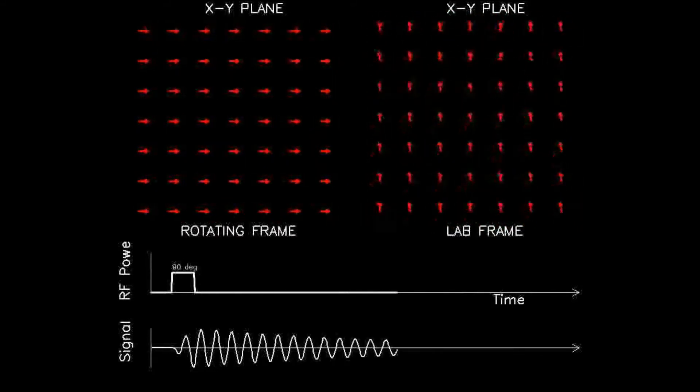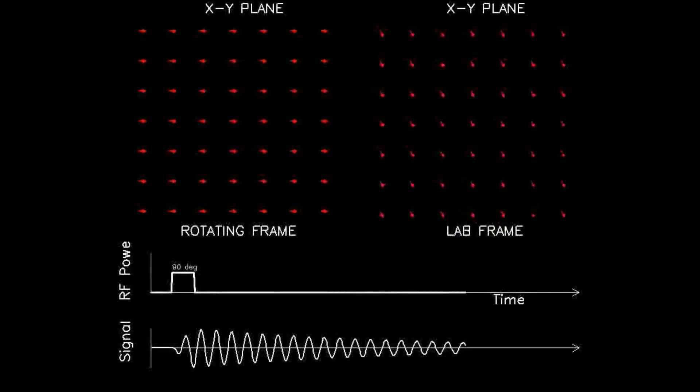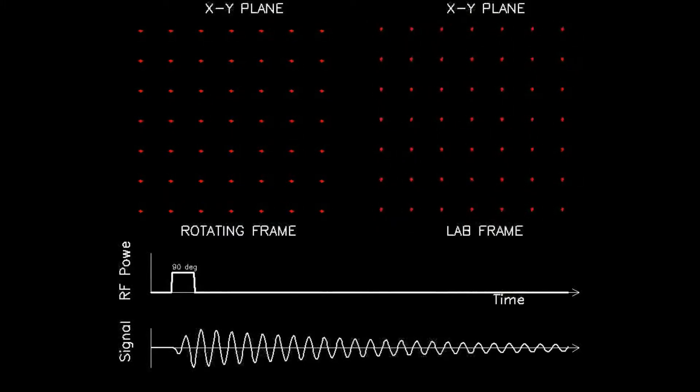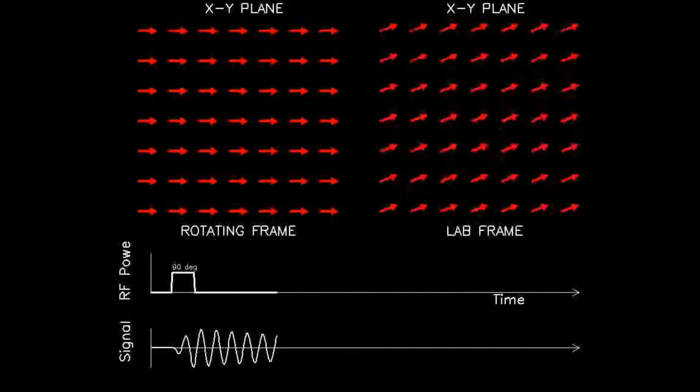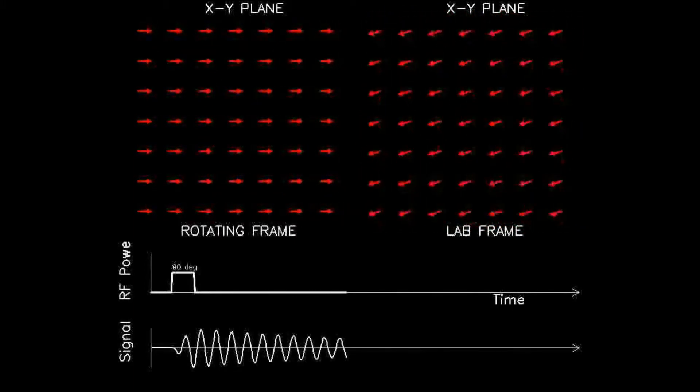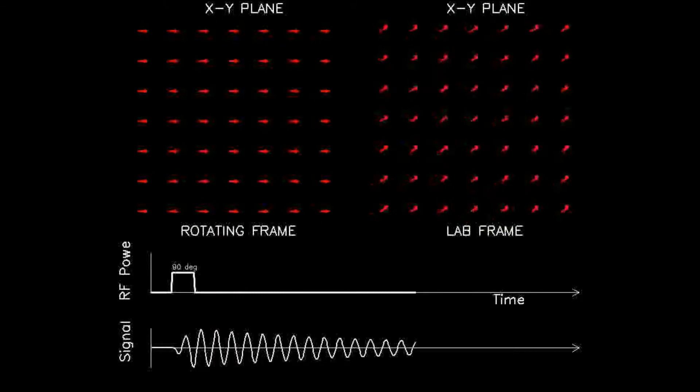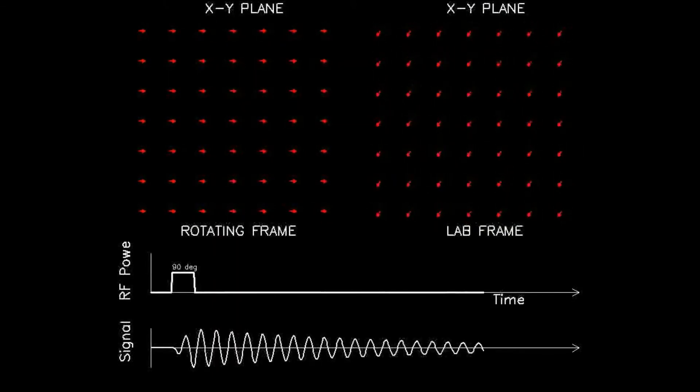When the 90 degree RF power is applied, as indicated by the top timeline, the spins spiral down and flip onto the transverse plane, which is visualized by the increased length of the rotating red arrows. Note how all the dipoles rotate in exact synchrony with the same phase.